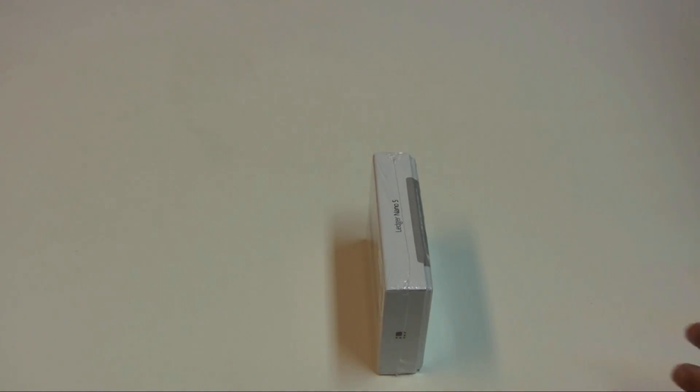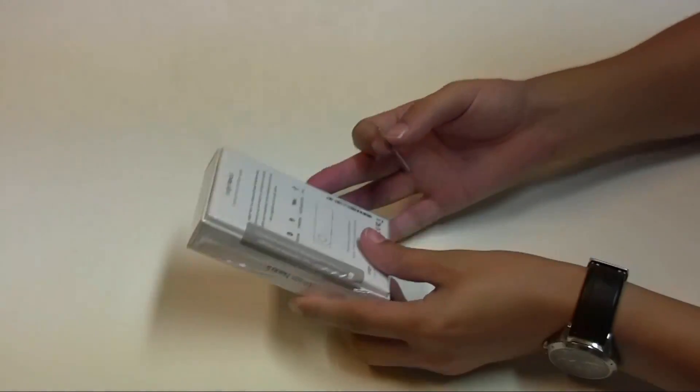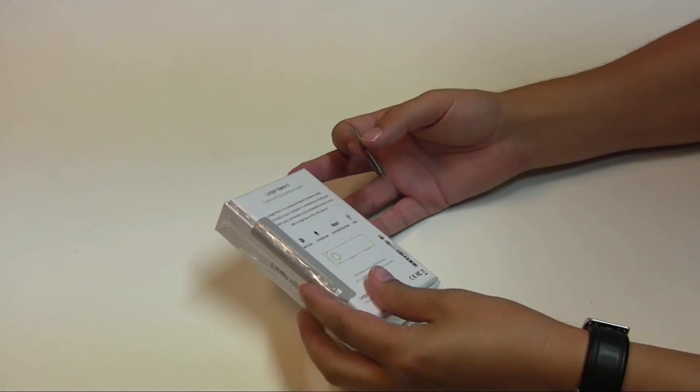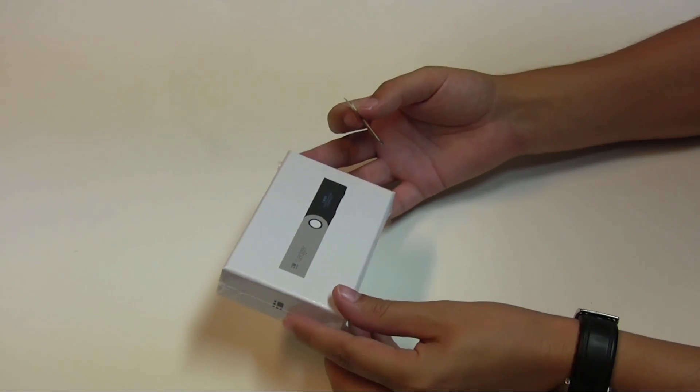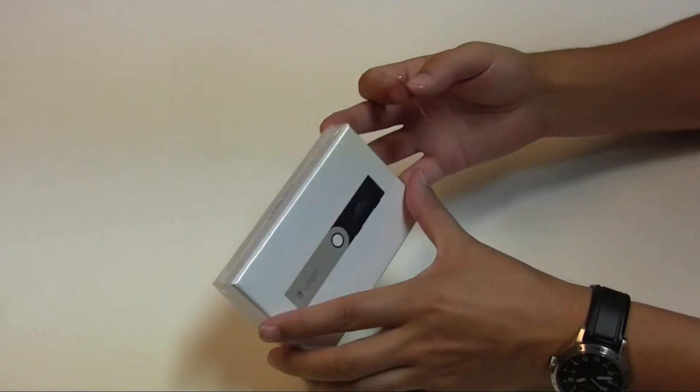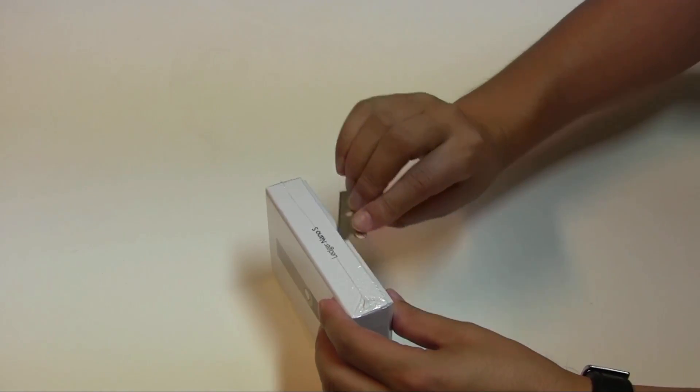So let's actually take a look at the actual product. So the Ledger Nano S is actually a crypto hardware wallet and it's actually my first time dealing with one of these. So let's open up and take a look inside.